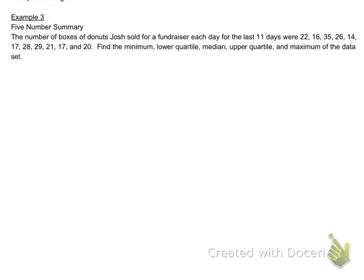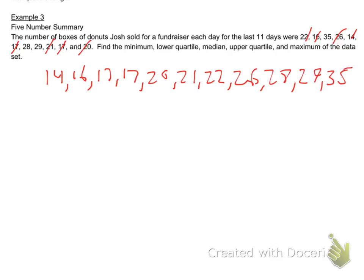So, what's the smallest number? So, 14. That's there. Next. 16. 17. Next. And there's two of those, yes? Okay. Then, 21. 22. Oh, there's a 20. Whoops. 20. 21. 22. And then it goes 26. 28. 29. 35. And then count them up to make sure you have 11.